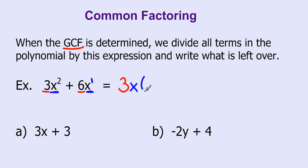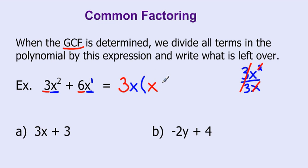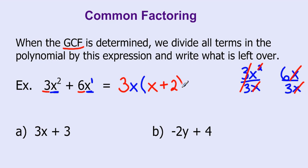Now we have to write what's left over. If we take 3x out of each term: 3x squared divided by 3x — the 3's cancel out, and x times x divided by x leaves us with x. Then 6x divided by 3x — the x's cancel out and we have 6 divided by 3, which is 2. So if I was going to factor 3x squared plus 6x, my answer is going to be 3x times (x plus 2).